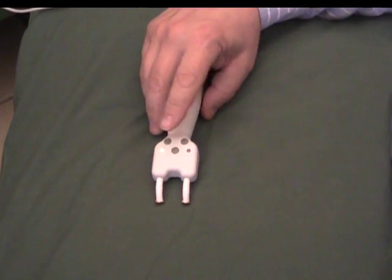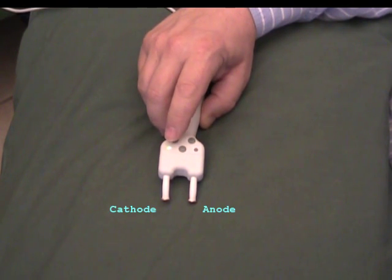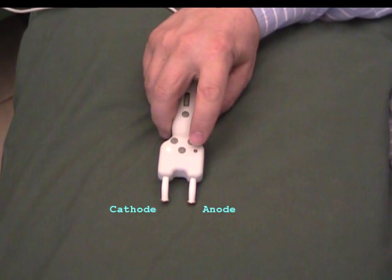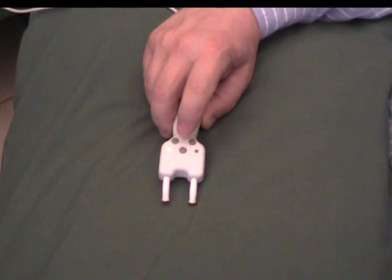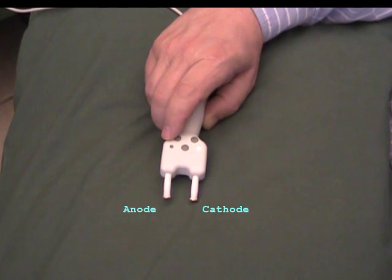Also on the probe, higher closer to the tip, is the indication of the cathode and anode. In this instance the cathode is the lit LED. Anode is the other one. If I press the button I change the cathode to this position and the anode to this one.